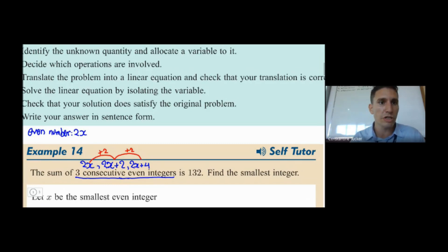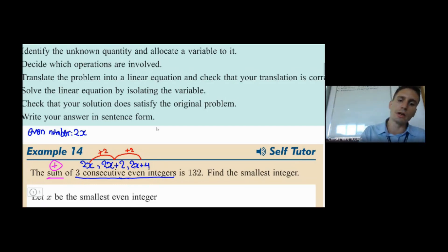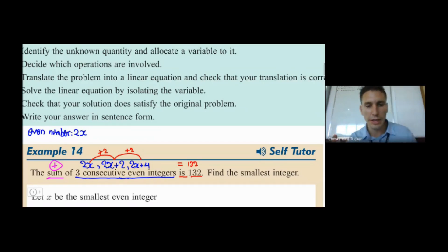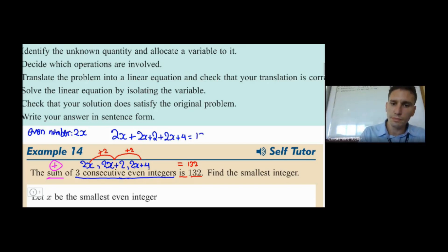Remember, 'sum' means plus, so they're saying if we add these up the result is 132. So we're practically translating this into maths. We write: 2x plus (2x+2) plus (2x+4) equals 132.